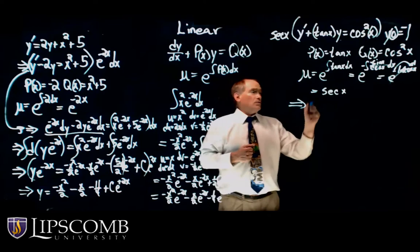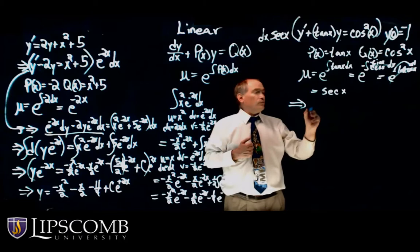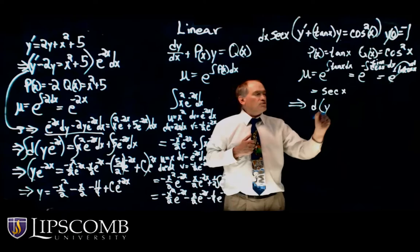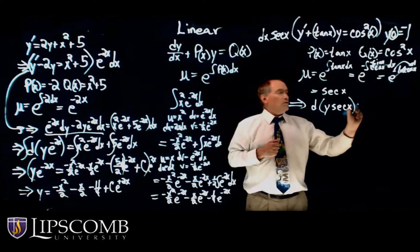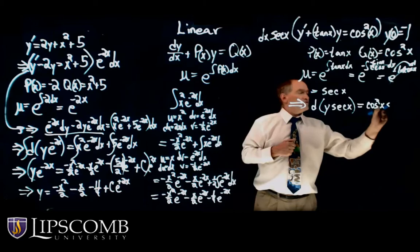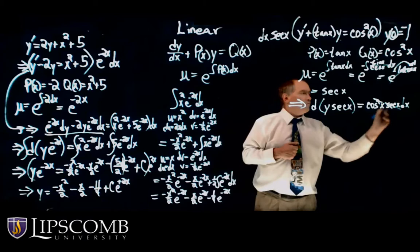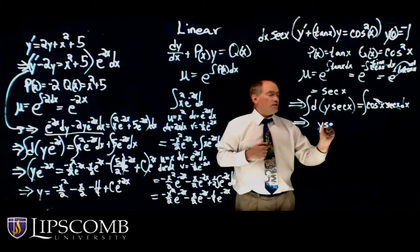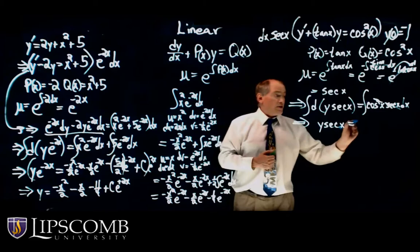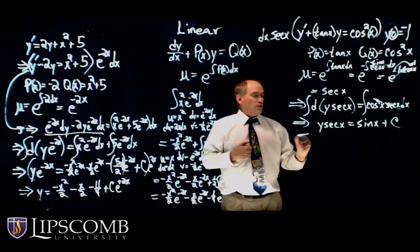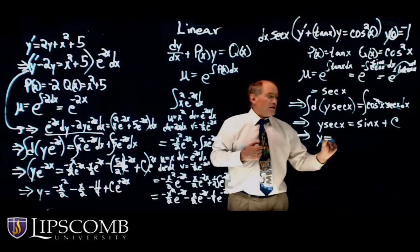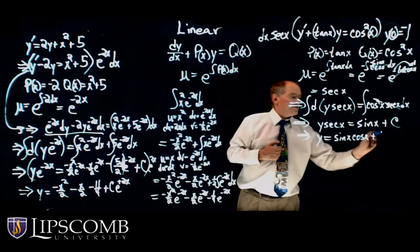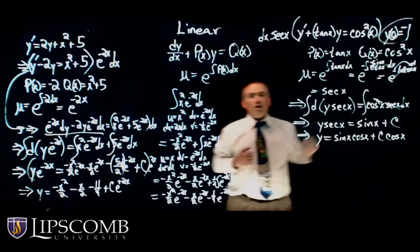Multiplying through by secant of x and dx, on the left side I get the total differential of y times the integrating factor. On the right, cosine squared x times secant of x dx — one cosine cancels, leaving just cosine of x dx. Integrating both sides: y secant of x equals sine of x plus C. Multiplying both sides by cosine of x gives y equals sine of x cosine of x plus C times cosine of x.